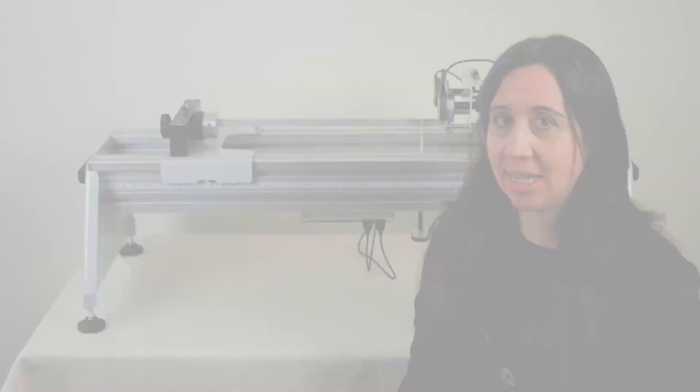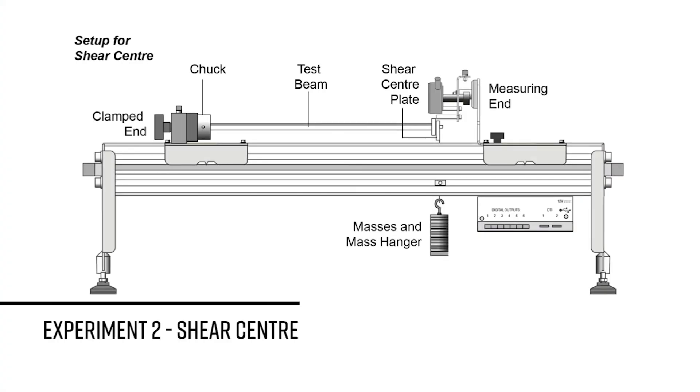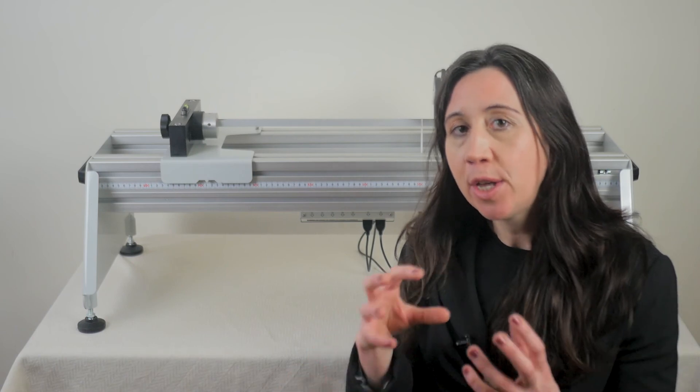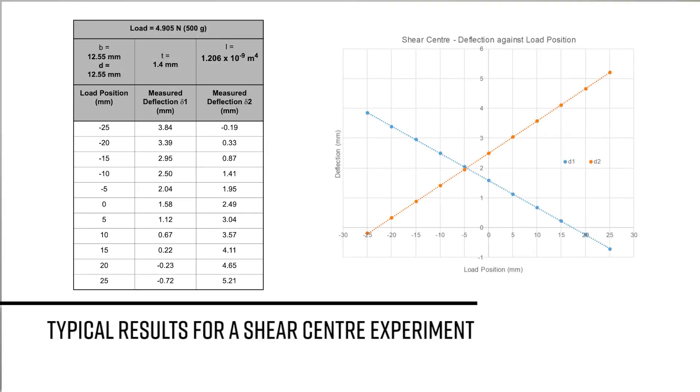The second experiment looks at the shear center of a U-section beam, also known as a channel beam. A plate is clamped to the free end and allows various offset loads to twist the beam. You apply loads at various offsets and use the indicators to determine when the twist is zero. This is the shear center position.